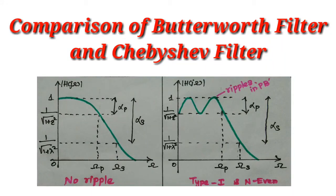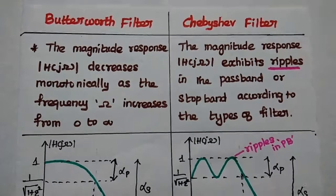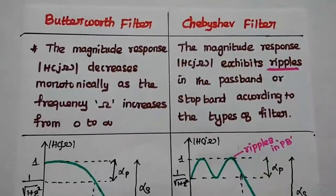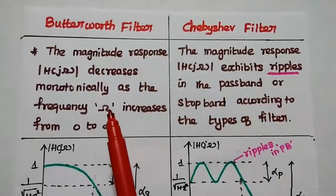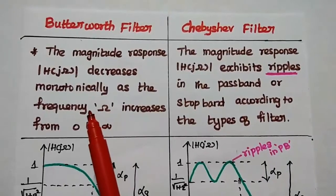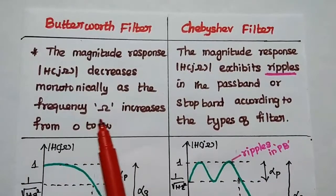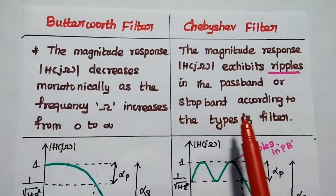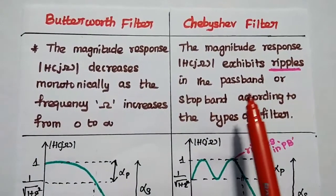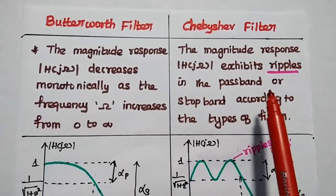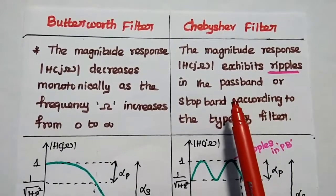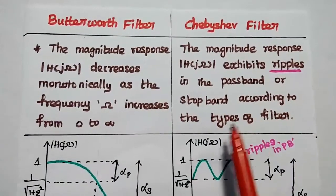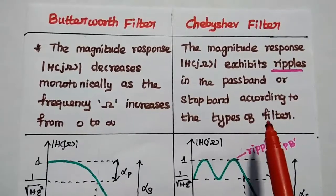Dear students, now we are going to discuss the comparison between Butterworth filter and Chebyshev filter. The magnitude response of the Butterworth filter decreases monotonically as the frequency increases from 0 to infinity. But in the Chebyshev filter, the magnitude response exhibits ripples in the passband or stopband according to the type of filter.